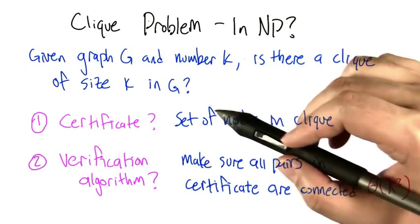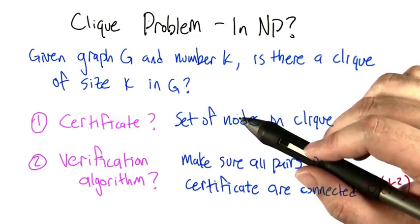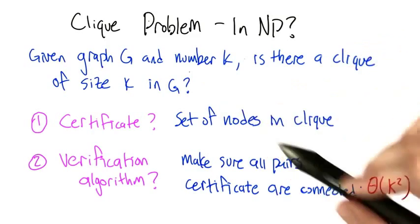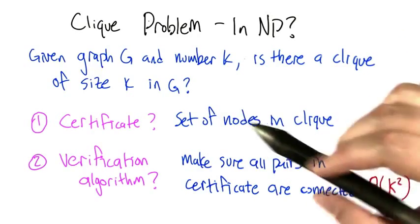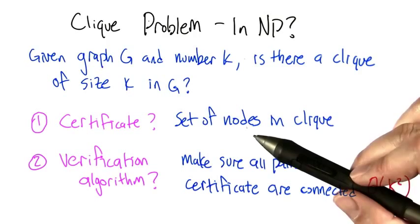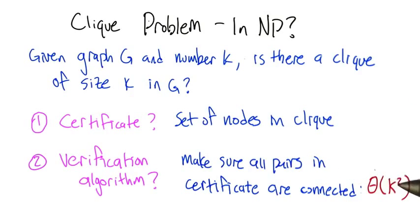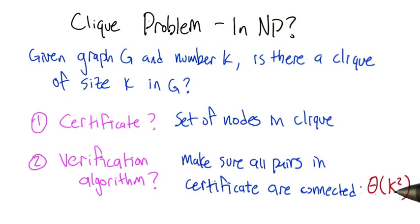For each one, you just have to ask the question: is this pair an edge in the graph? Each of those tests takes unit time, constant time, and there are order big theta of k squared pairs to check. So this verification algorithm runs in polynomial time.